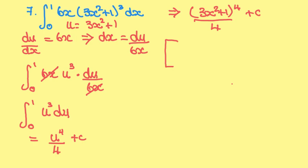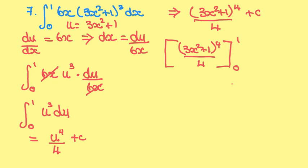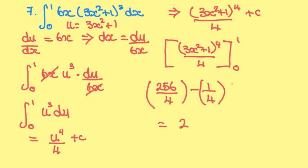Now we can find the numerical value: evaluate (3x squared plus 1) to the power of 4 divided by 4 between 0 and 1. Substituting x equal to 1: 3 times 1 plus 1 equals 4, so 4 to the power of 4 is 256, divided by 4 gives 64. Substituting x equal to 0 gives 1 to the power of 4 divided by 4 equals one quarter. So 64 minus one quarter gives 255 over 4, which equals 63.75.